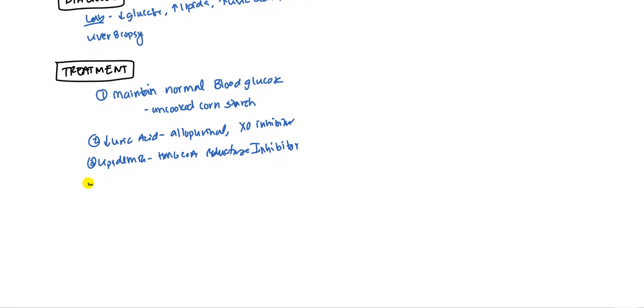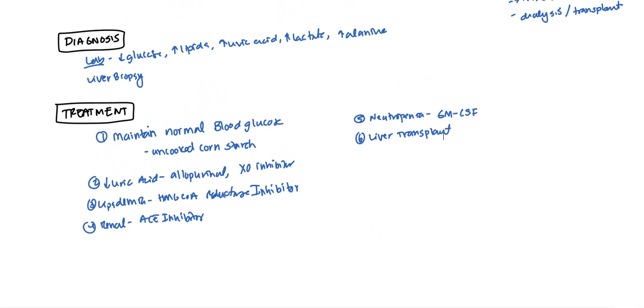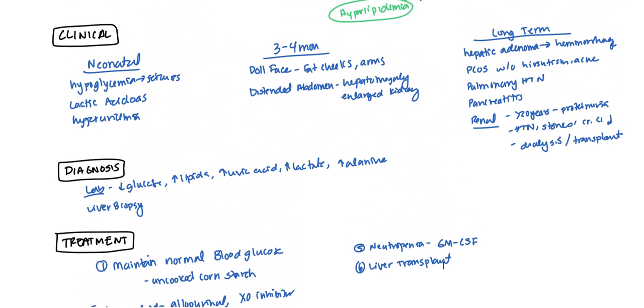For the renal complications, you do want to protect the kidneys. You can give ACE inhibitors for that. They tend to do a pretty good job. Sometimes there have been some patients who have neutropenia. However, by just giving them the colony stimulating factors, the GM-CSF, has been helpful. And finally, liver transplants. If you get really bad, they can get into liver failure and then transplant can be required as well. So this is the first glycogen storage disease. Hope you guys learned a lot and see you guys in the next video. Thanks.